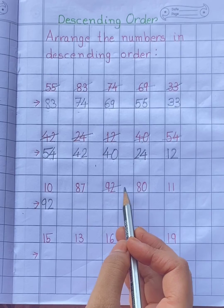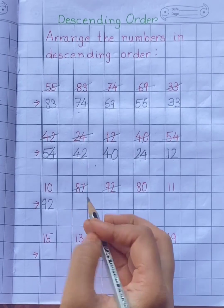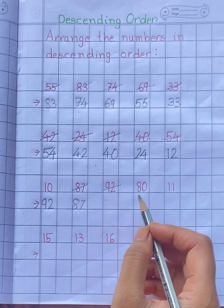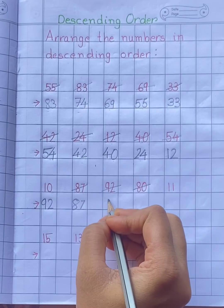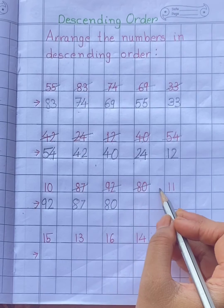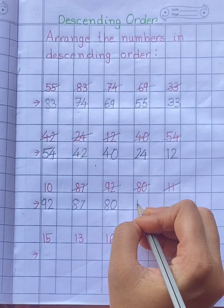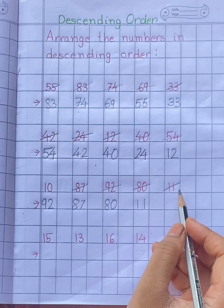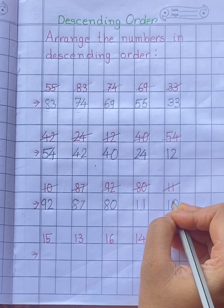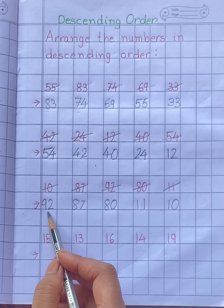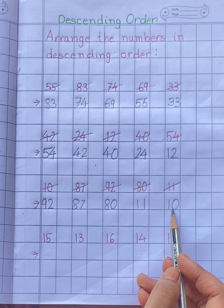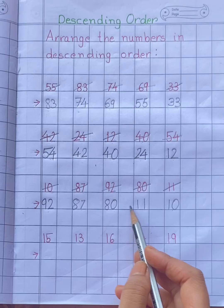Next number will be 87, then 80. Next number is 11, then 10. So the descending order is: 92, 87, 80, 11, 10. Big number to small number.